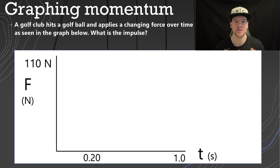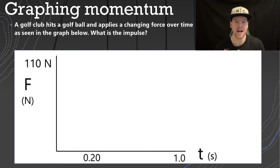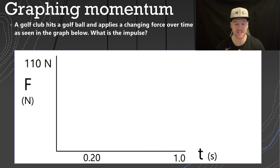This concept of increasing the amount of time in a collision is applied to protective devices like phone cases and pretty much all safety equipment. To conclude this lesson, we're also going to look at graphing momentum. You may have seen graphs of force versus distance when looking at changes in energy — now we're going to look at force versus time and changes in momentum. Consider the situation where a golf club hits a golf ball and applies a changing force over time. What is the impulse?